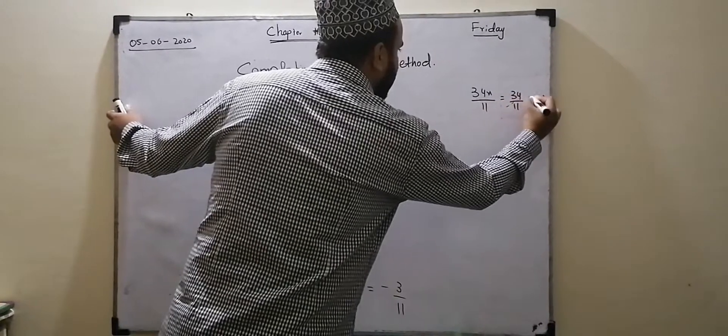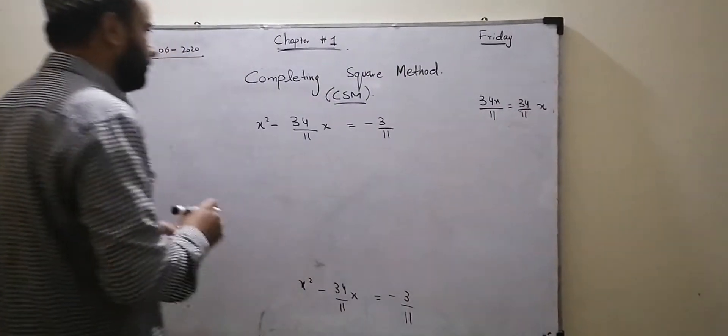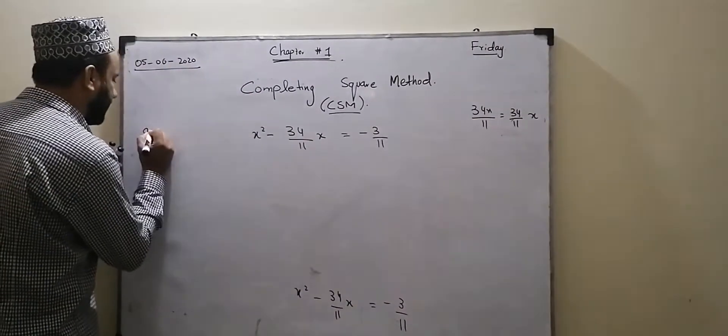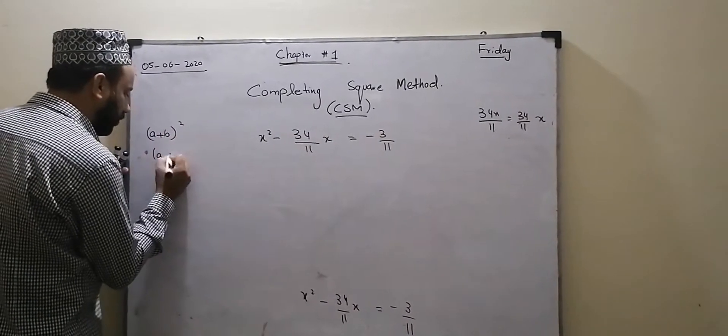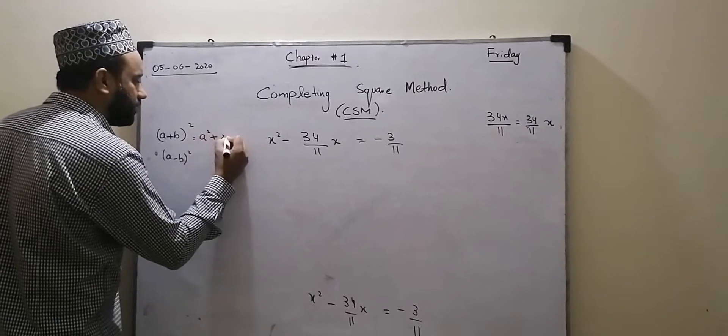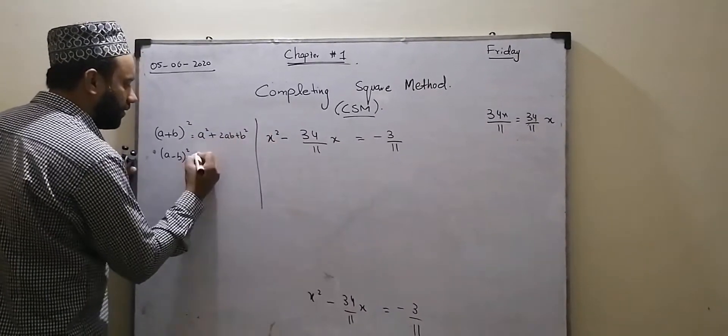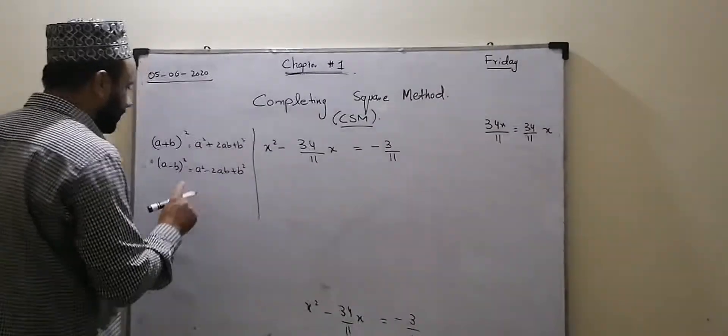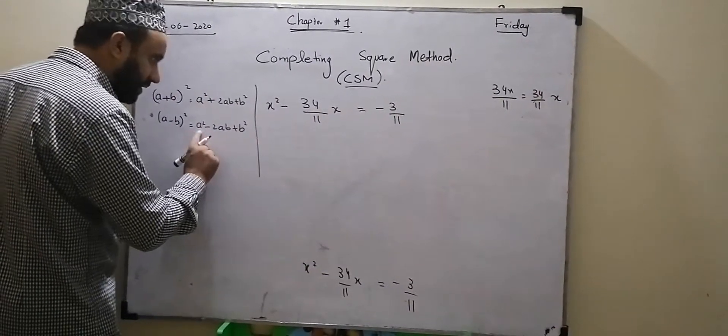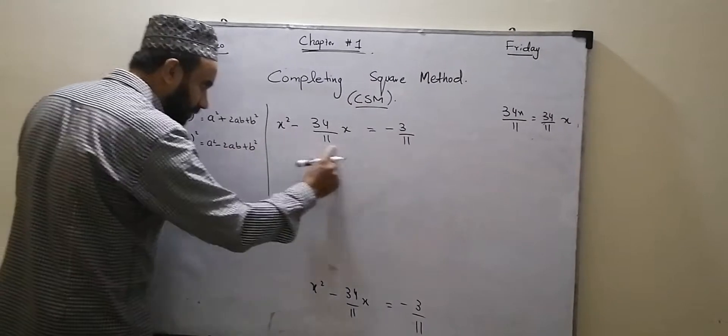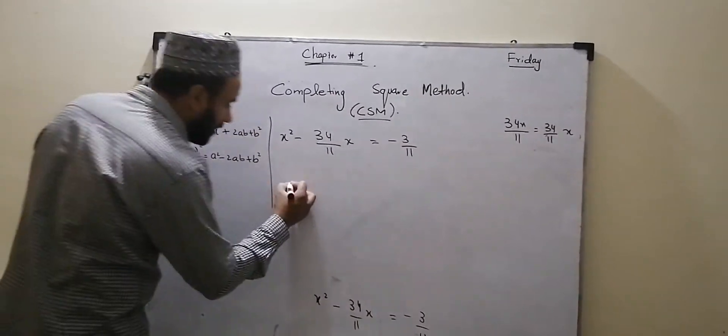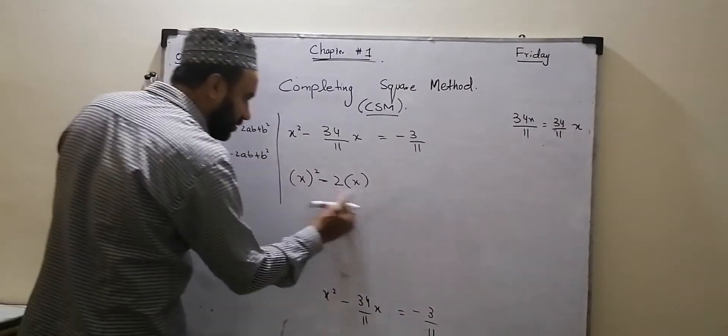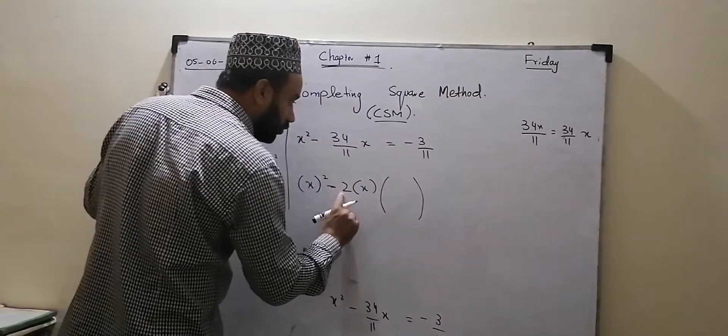We have 34 by 11x. Now I have to tell you, the next shape is A plus B whole square and A minus B whole square. This is A² plus 2AB plus B². This is A² minus 2AB plus B². If we have this 2AB shape, we can try to make this way.